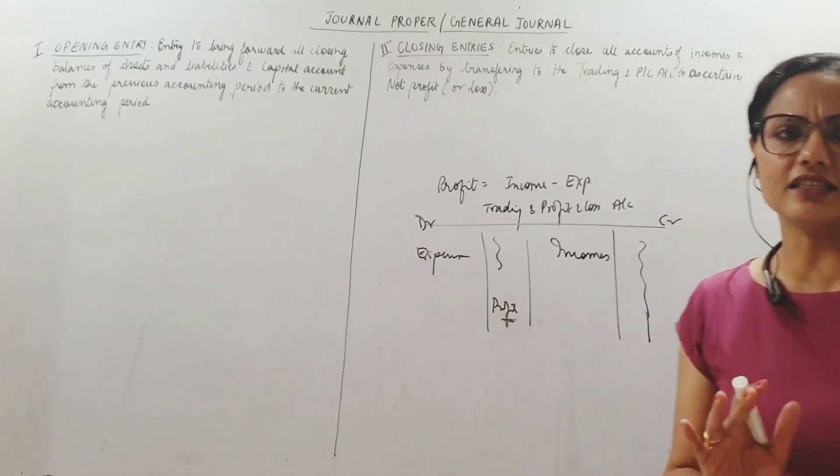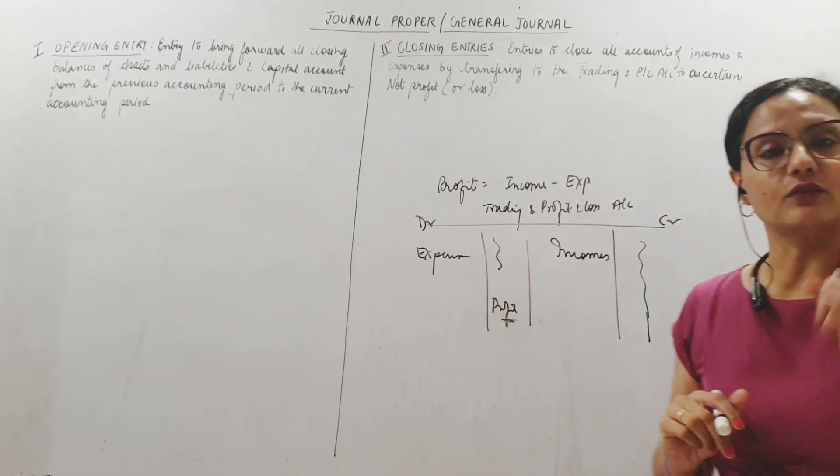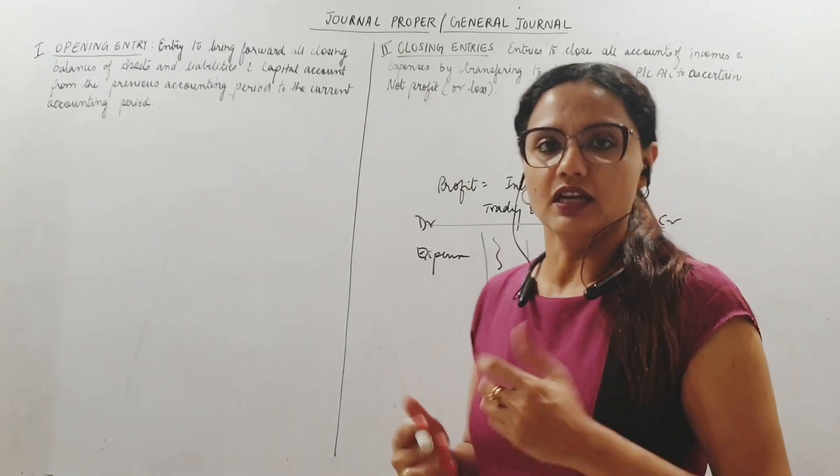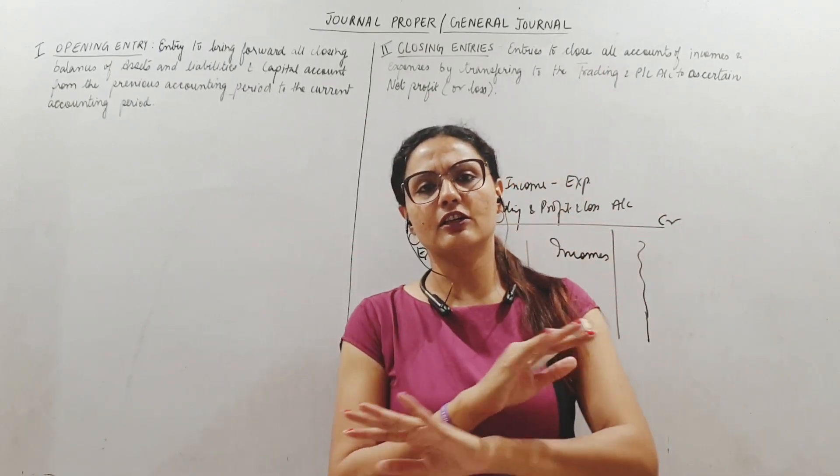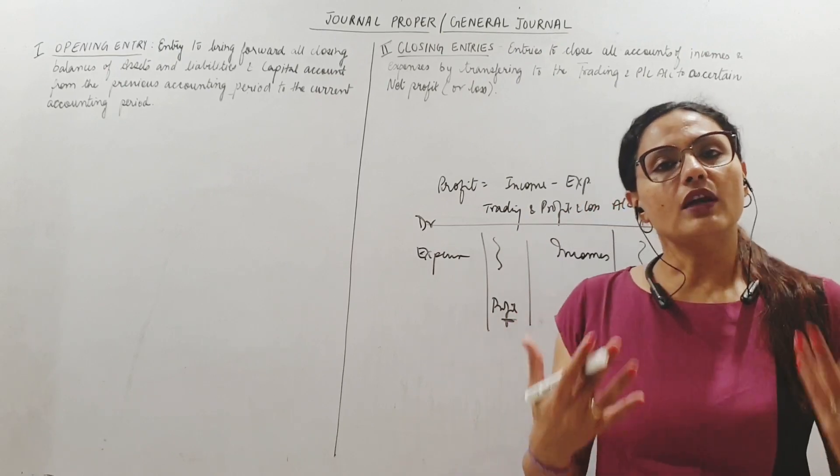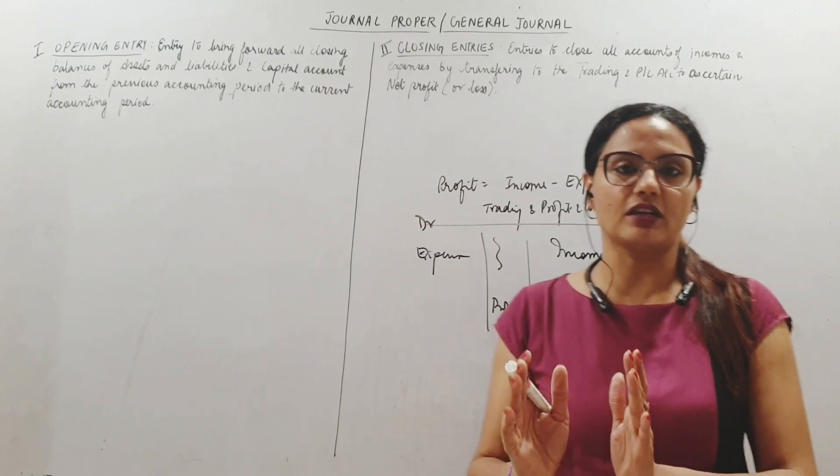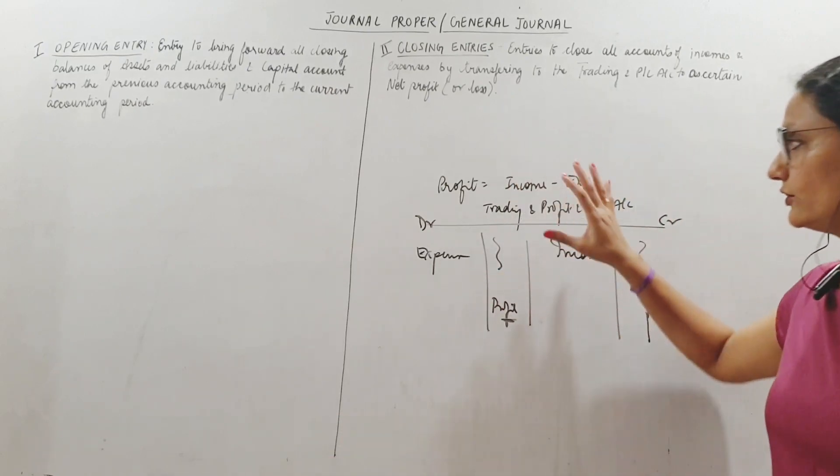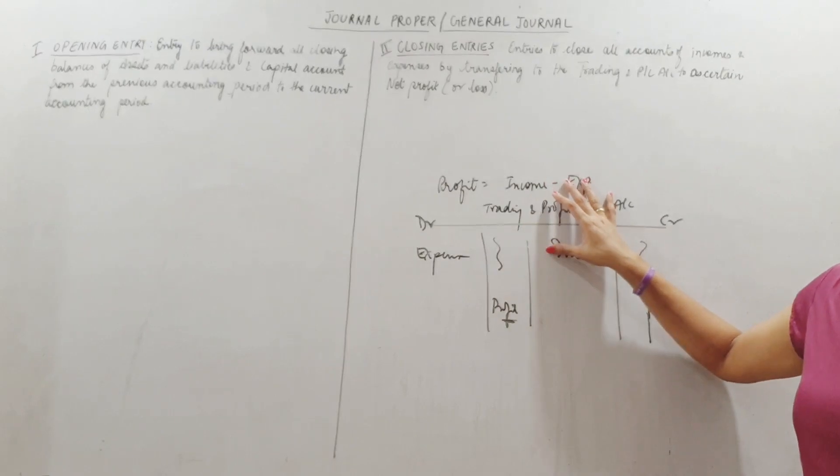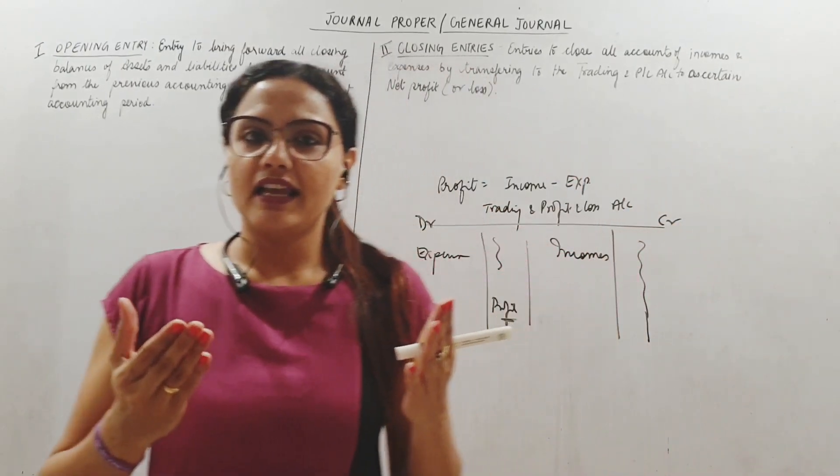My objective of making the trading and P&L account is to find out profit or loss. For that I have already transferred and closed my income and expense accounts. What type of accounts am I left with? If incomes and expenditure accounts are all closed, the balances are transferred because we need to find out net profit or loss.